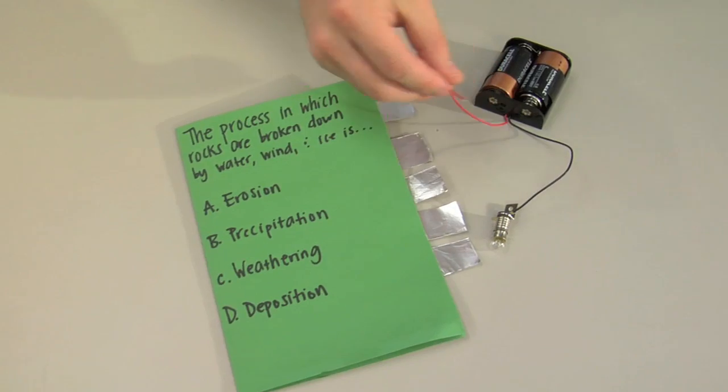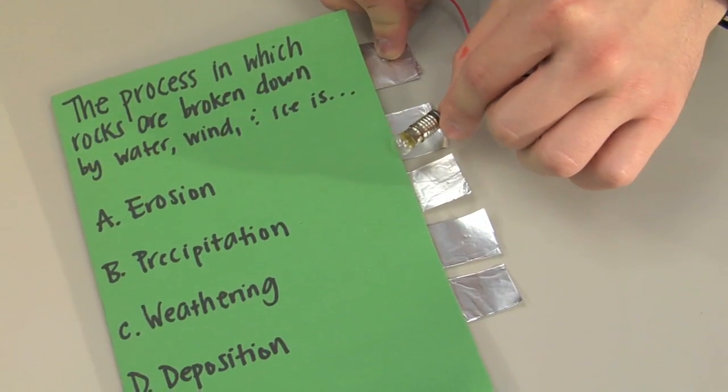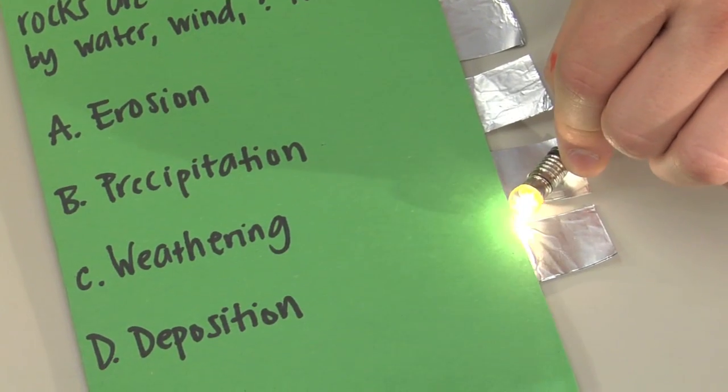To illustrate the electrical circuit, connect one wire to the question foil and the other end of the circuit to each answer choice. The correct answer will complete the circuit and light the bulb.